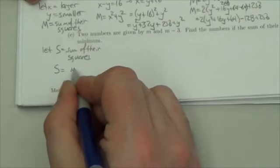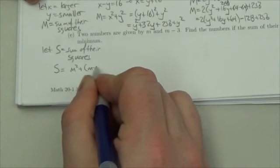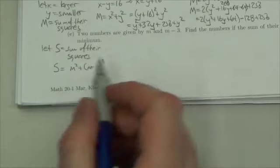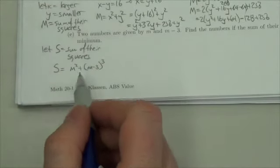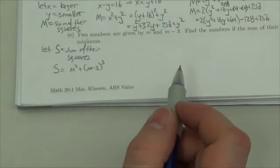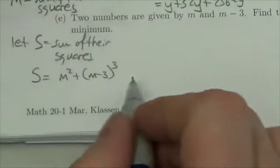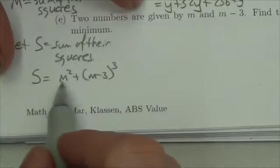So what that means here is s is going to equal m squared plus m minus 3 squared. Okay, so this is s, which is what I want to minimize, which means this is what I'm going to complete the square on. We'll just zoom in on this.